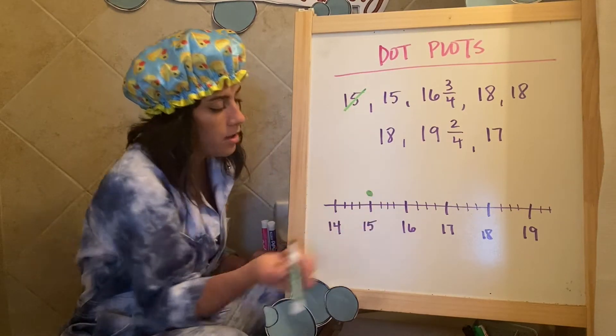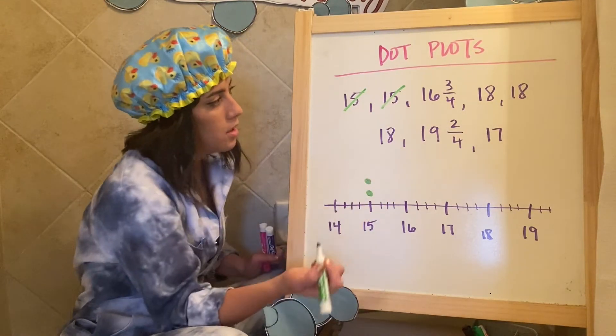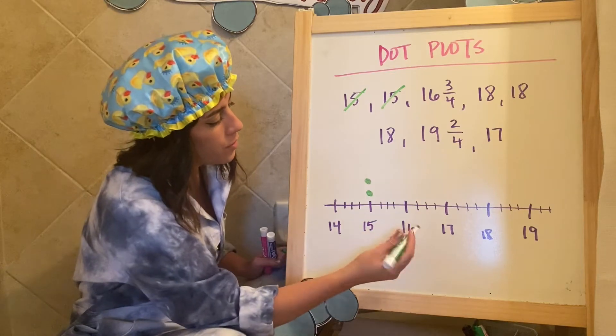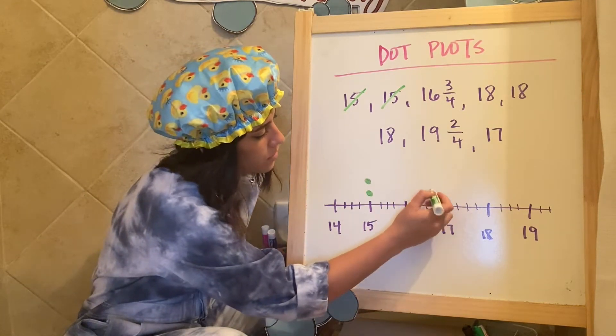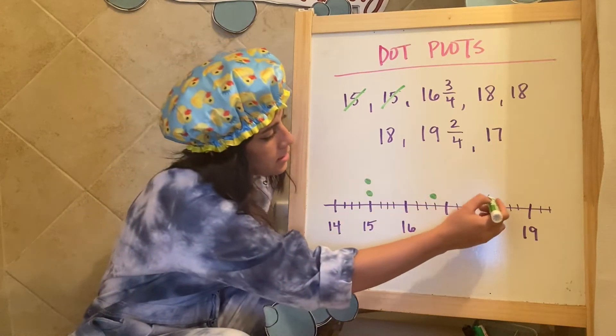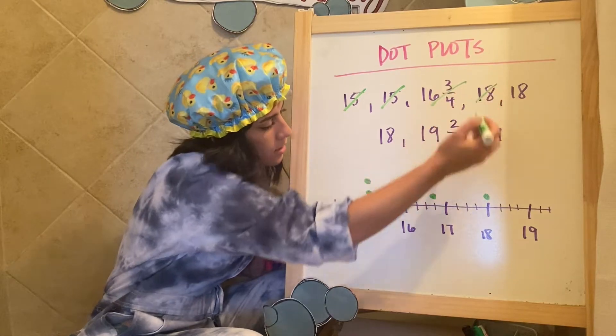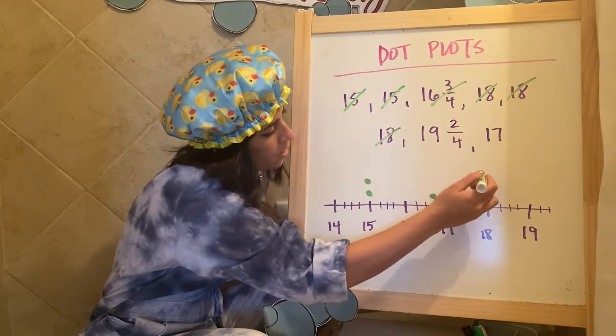So I see a 15, I'm going to cross that out. I'm going to put a dot on 15. I see another 15. I'm going to put another dot. I see 16 and three fourths. So 16 and one fourth, two fourths, three fourths. So 16 and three fourths that goes there. I see 18. I can cross it out 18. I see another 18 and one more.